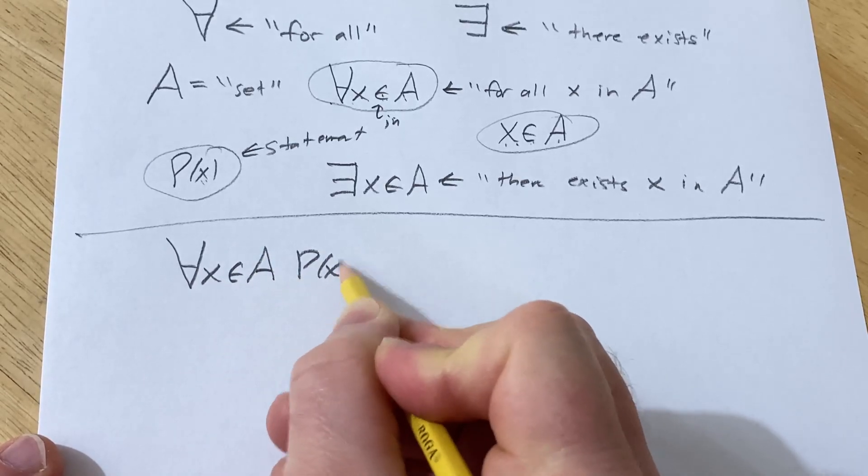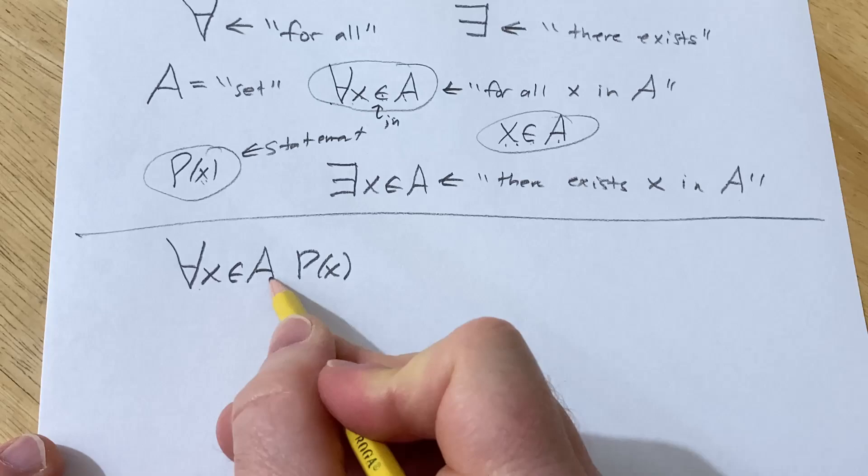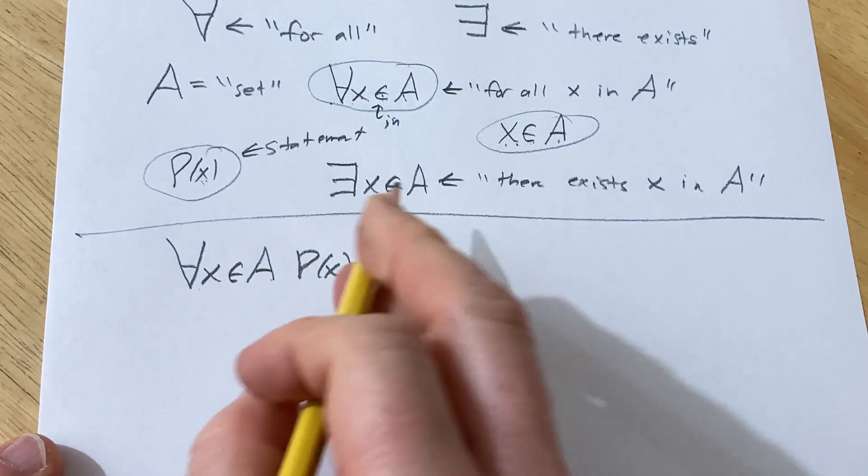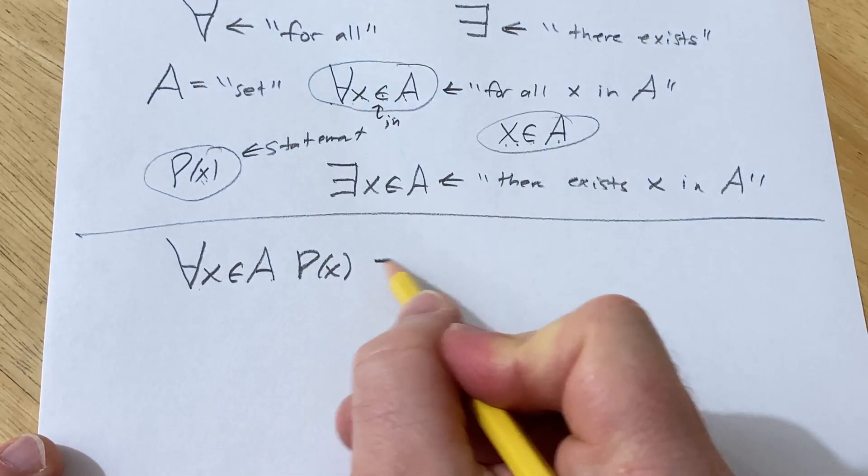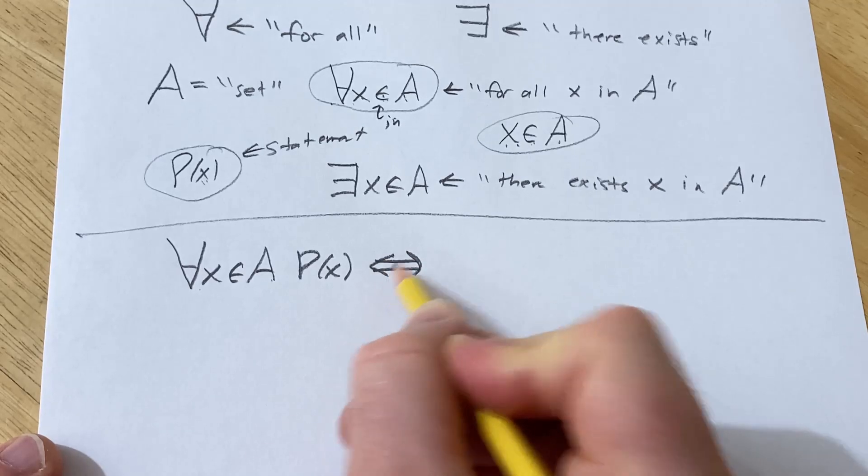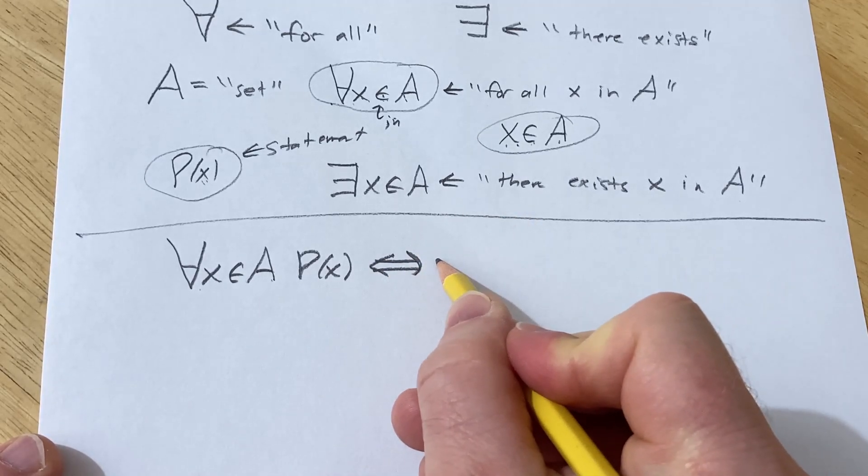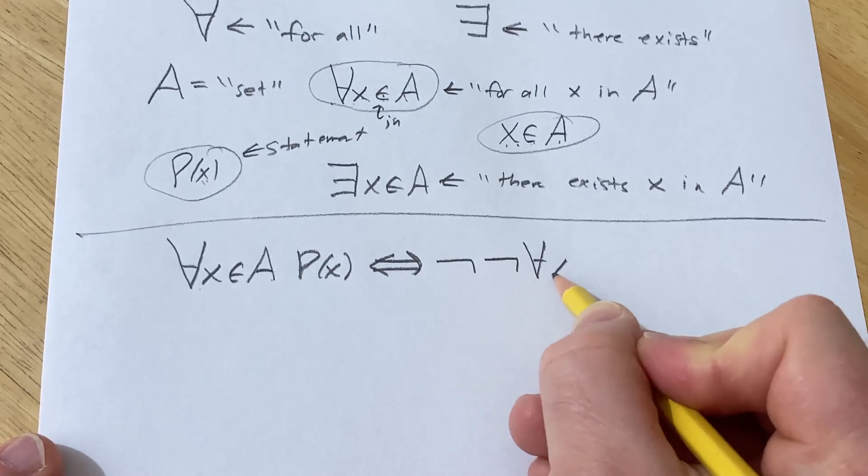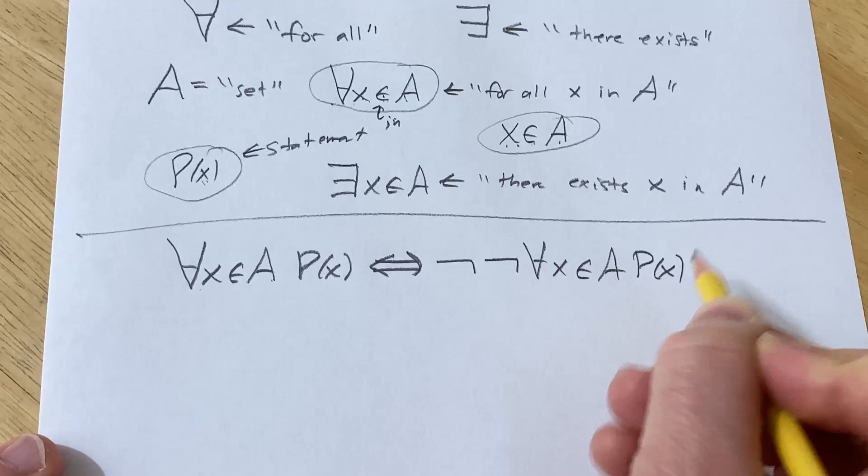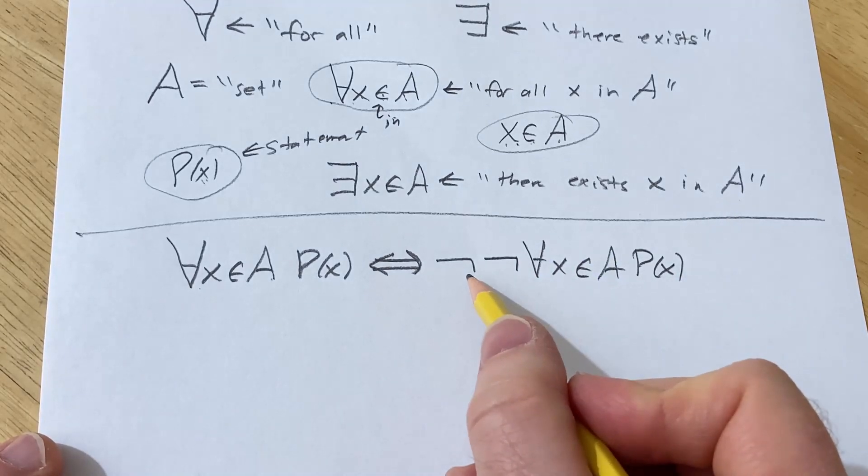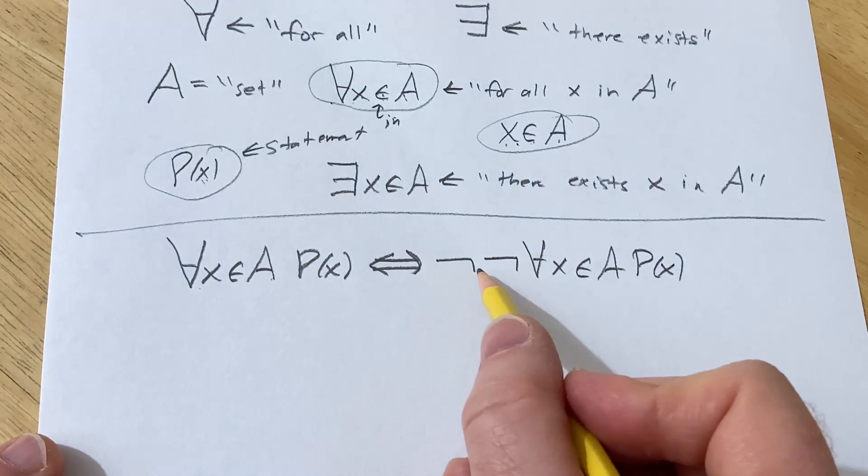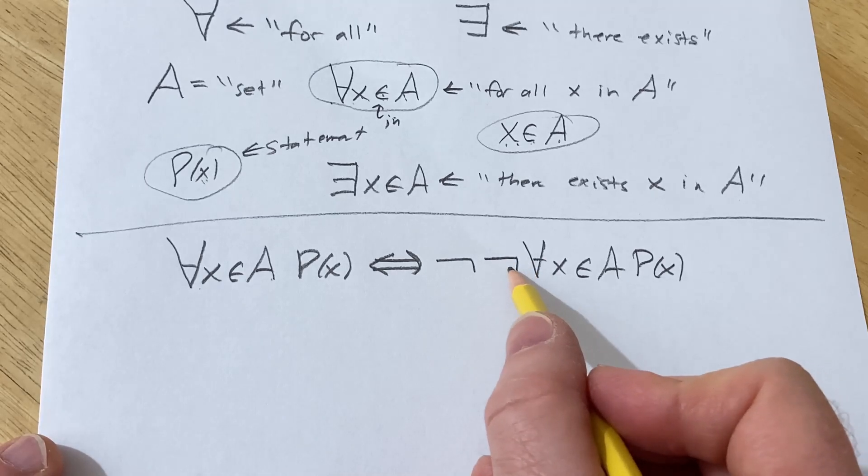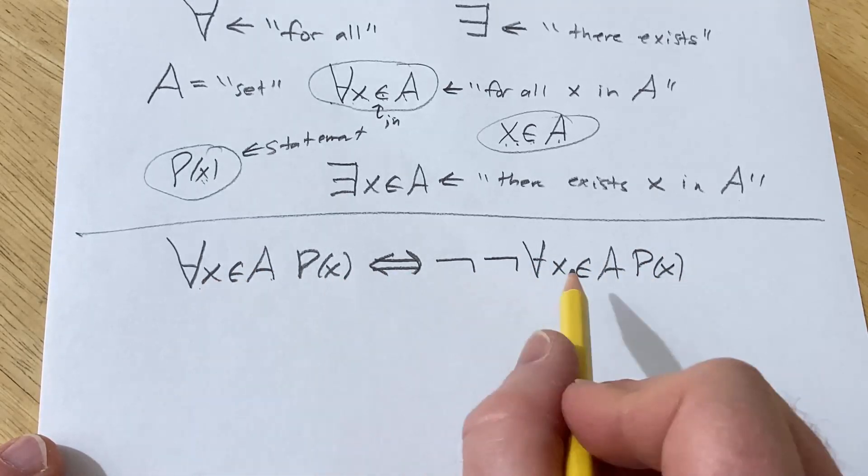All right. So for all X in A, P(X), we're saying that for all X in A, we're investigating the statement P(X). This is the same as saying, so I'm going to write a little symbol here. The opposite of the opposite of for all X in A, P(X). So this is a negation symbol. So common sense should tell you that the opposite of the opposite is what you start with. And that's exactly what this says here.